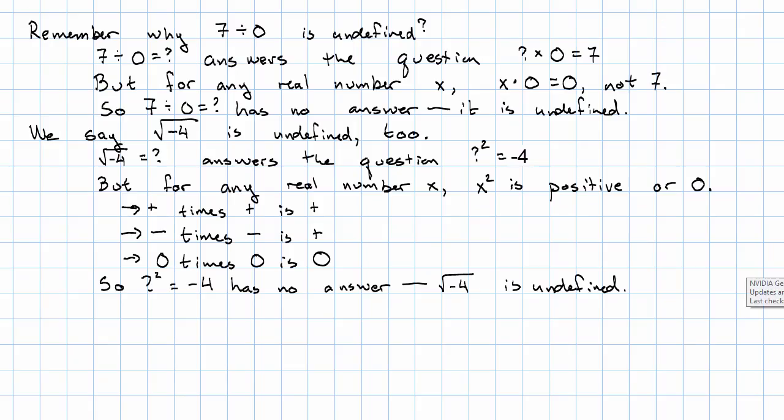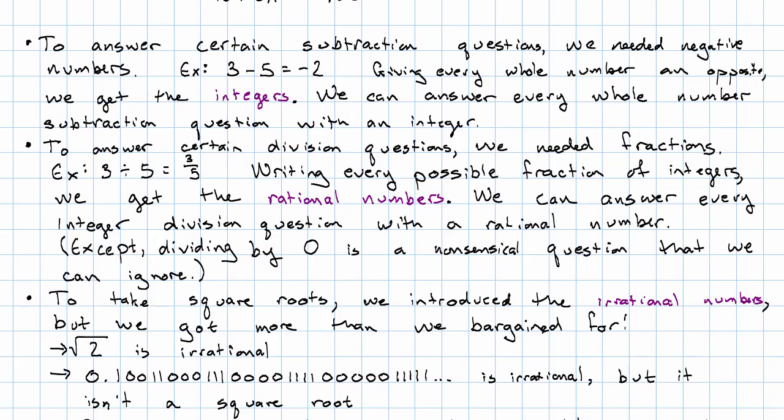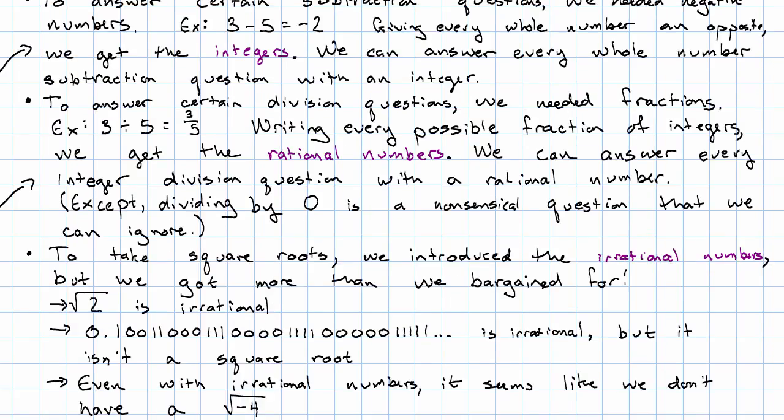Now, previously, when we had questions with no answer available, we invented some new numbers. We invented some new numbers in order to give certain subtraction problems an answer. We invented some new numbers in order to give some division problems an answer. And in fact, we invented some new numbers in order to give some of the numbers square roots. Why don't we just invent some new numbers to be 7 divided by 0, or the square root of negative 4?